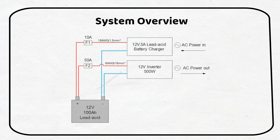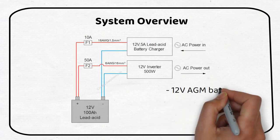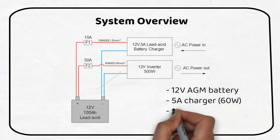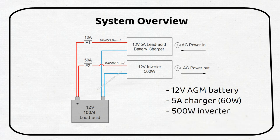We have a 12 volt 100 amp hour AGM lead-acid battery. We will charge the battery with a 5 amp charger which equals 60 watts. Then we will have a 500 watt inverter so you can power your AC loads.